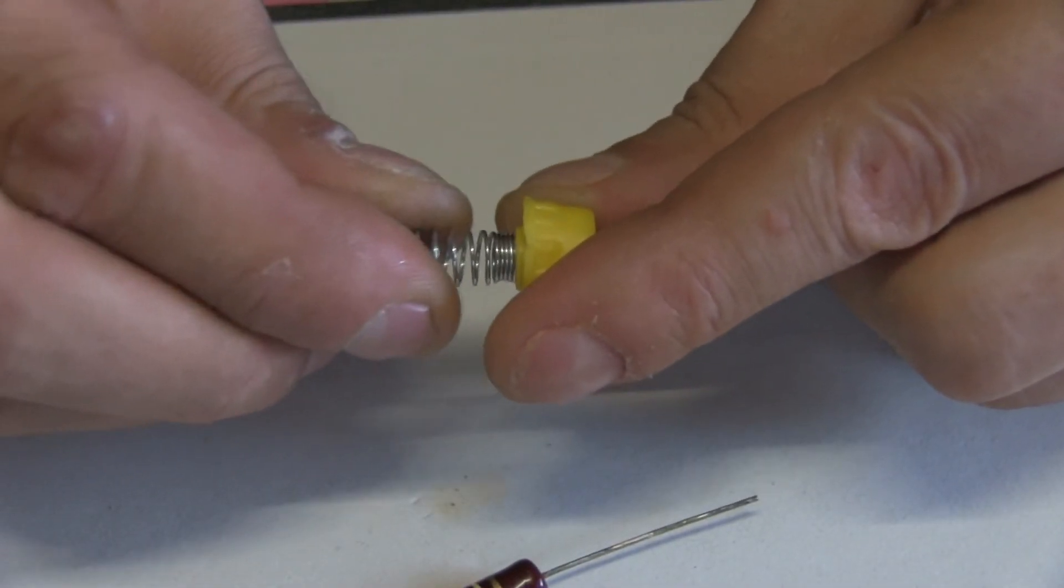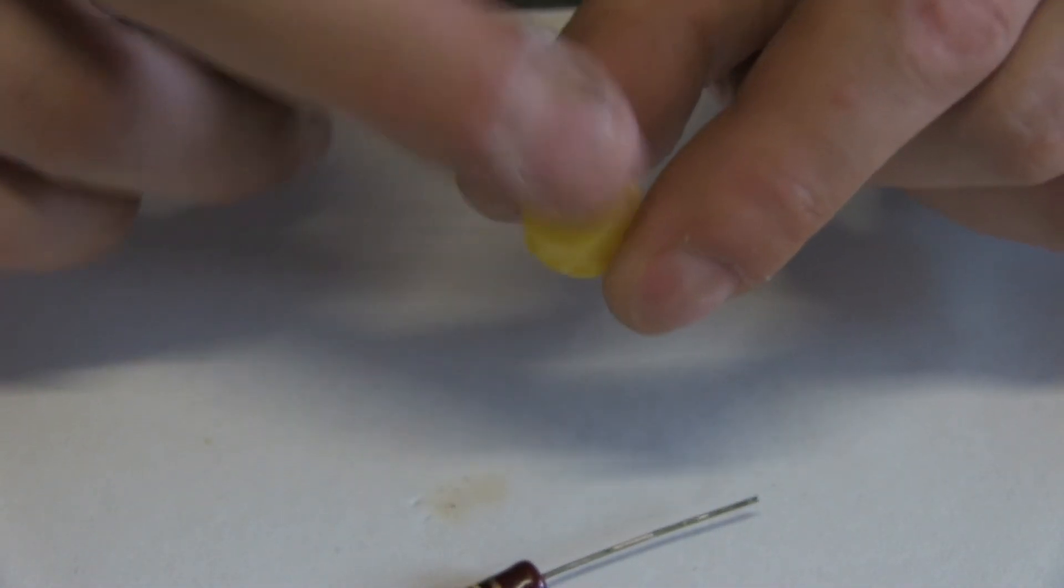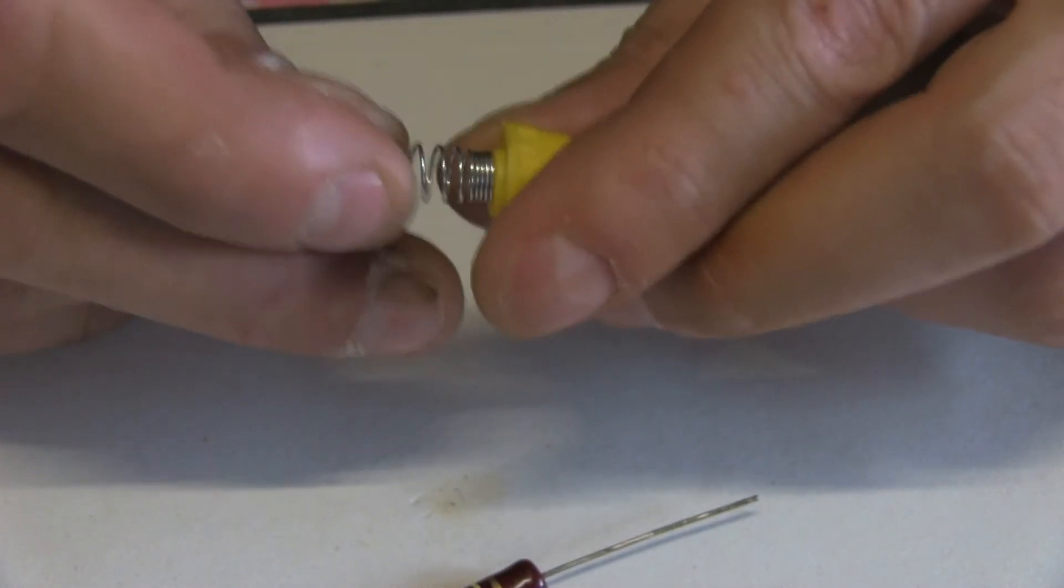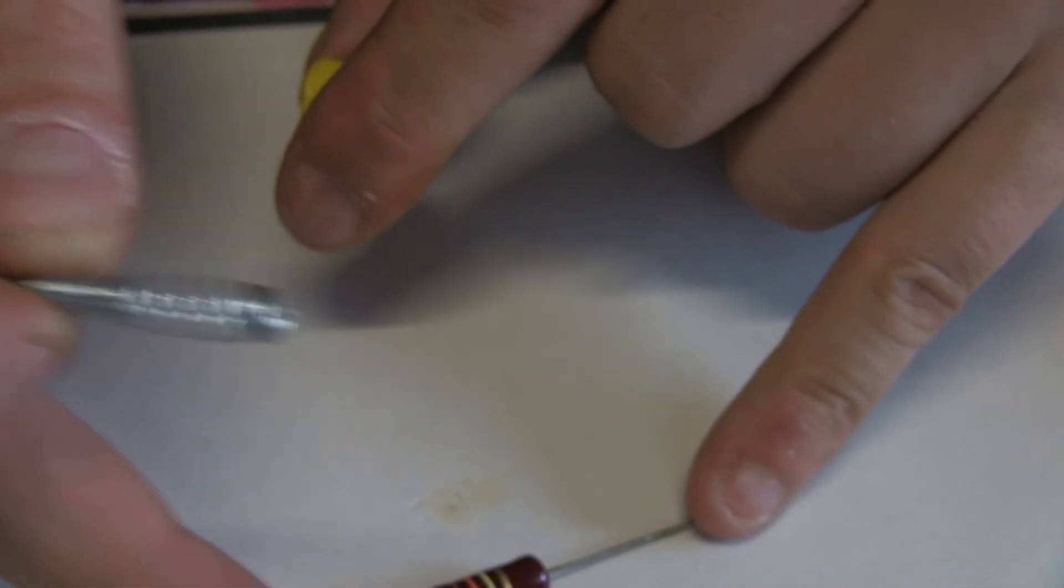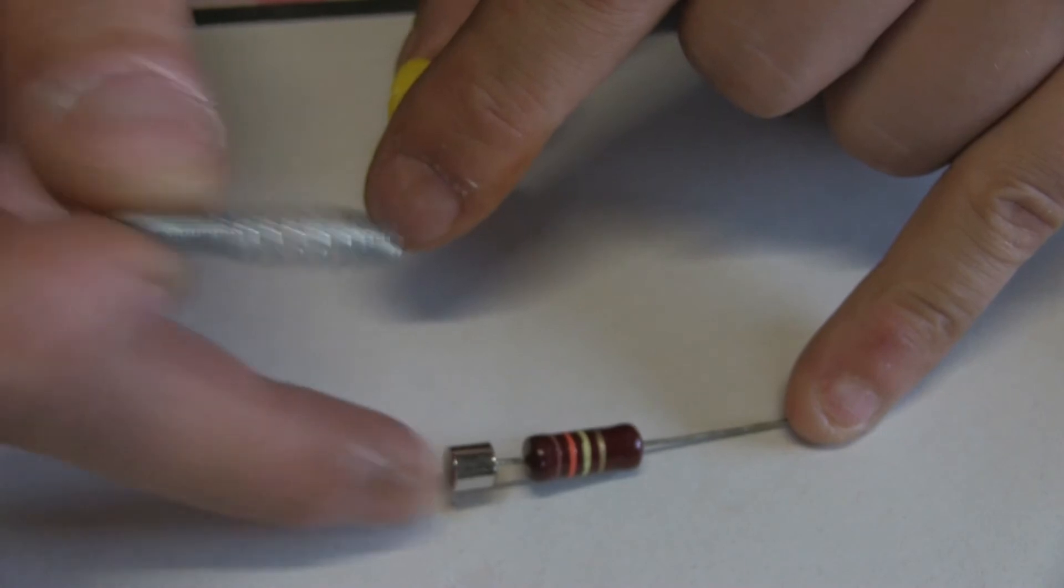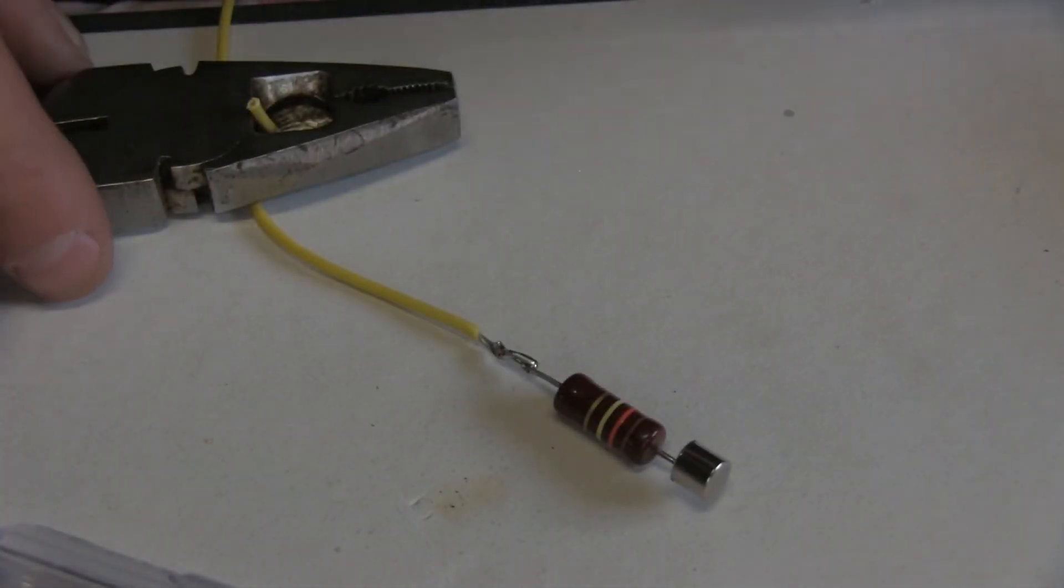I already removed the small contact here, and the spring is going to prevent it from rattling and make sure we have a good contact from this little metallic cup.